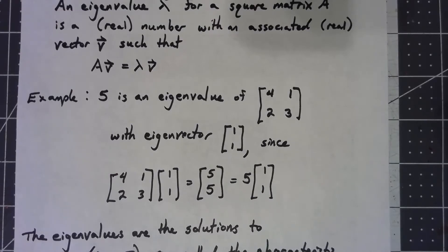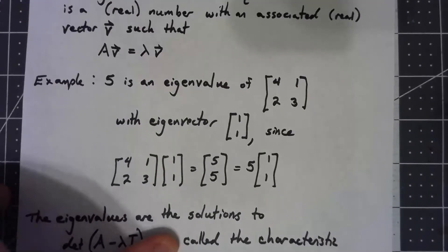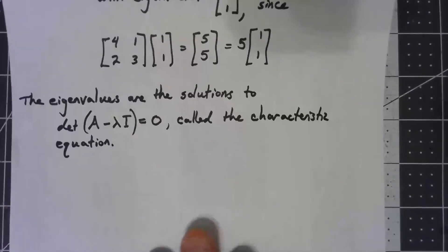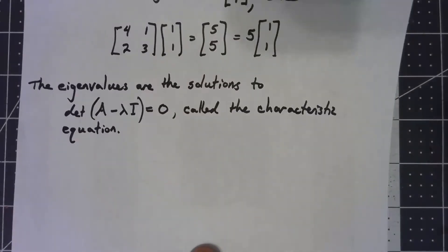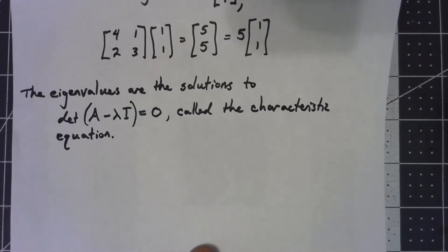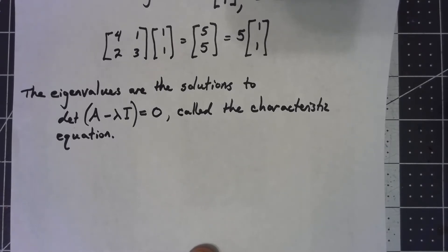In previous courses you're taught something like this: the eigenvalues are the solutions to what we call the characteristic equation. We take the determinant of the matrix A minus lambda I, set that equal to 0, and get a polynomial that we can solve.